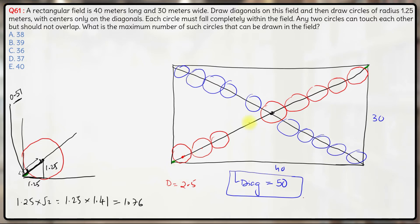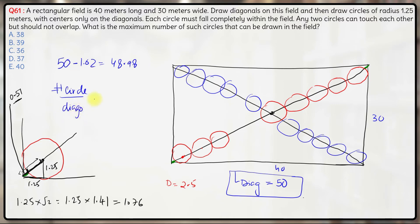The circles will not lie on these 0.51-meter sections at each end. So of the total 50-meter diagonal, we subtract 0.51 + 0.51 = 1.02 meters. That means the length of the diagonal available for circle diameters is approximately 48.98 meters. The number of circles per diagonal will be 48.98 divided by 2.5.